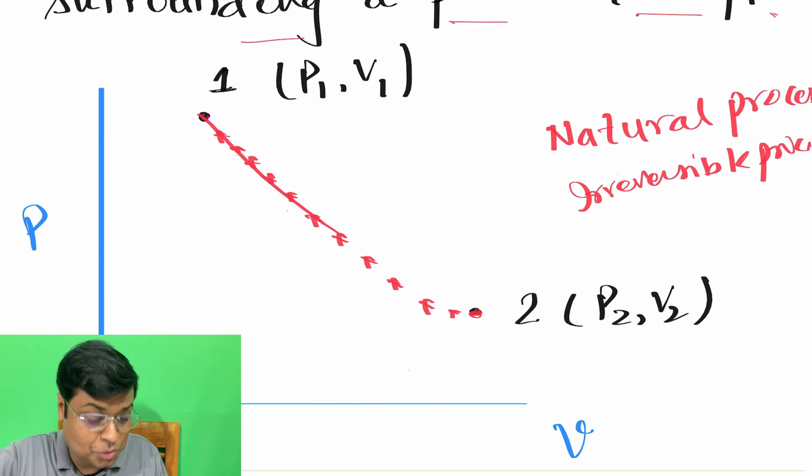And this type of process is called as quasi-equilibrium or quasi-static process. This is also called as reversible process.